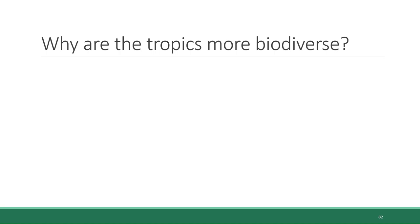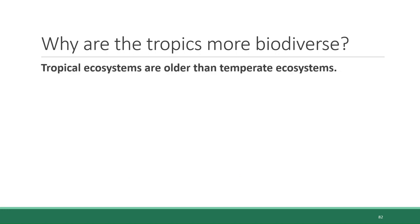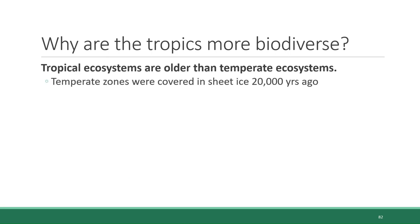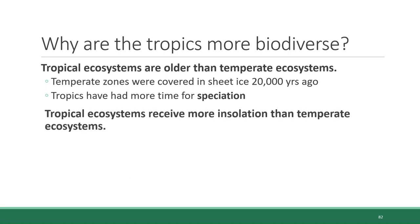Scientists have several hypotheses as to why this is the case. One has to do with the fact that tropical ecosystems are older than temperate ecosystems — they have existed in their current state for longer. That's because 20,000 years ago, the temperate zones in North America were covered in sheet ice, which means there was a very drastically different ecosystem than what is there today. So the tropics have had a longer time for environmental development, which means a longer period of time and more opportunities for speciation — the evolutionary process of new species emerging.